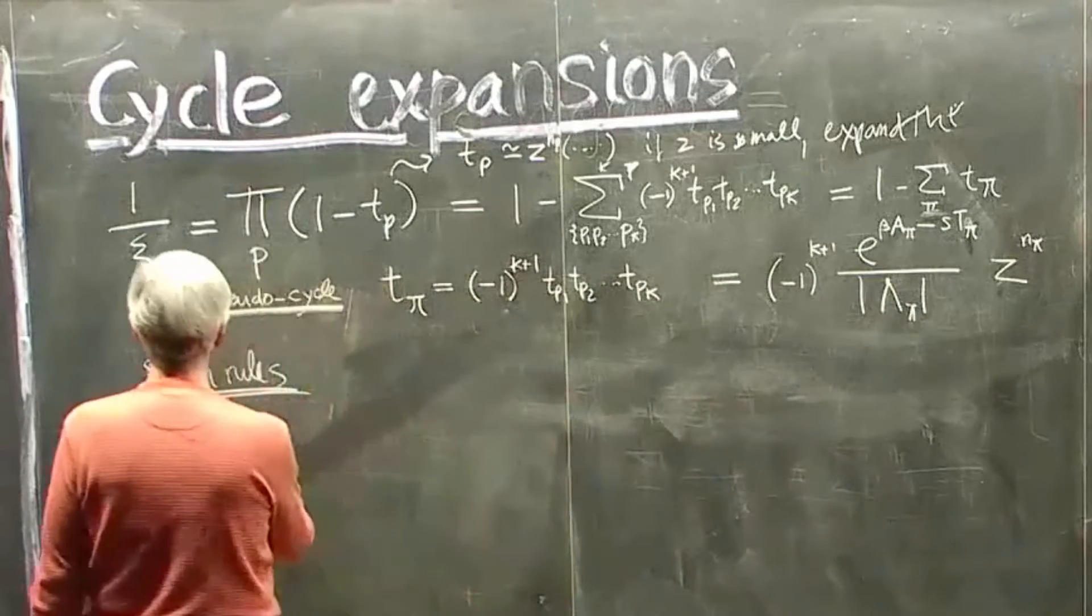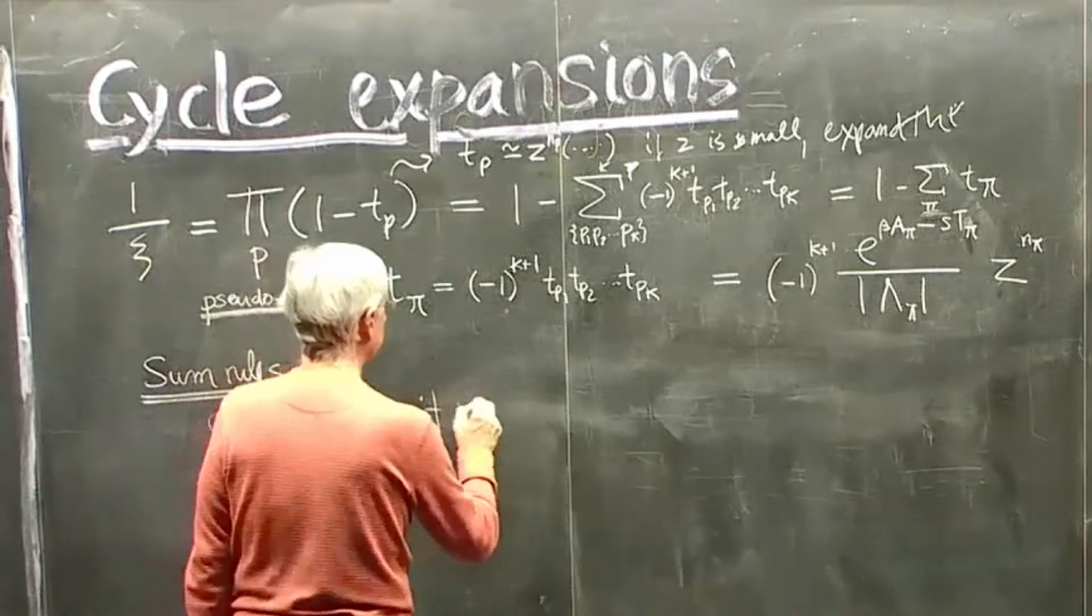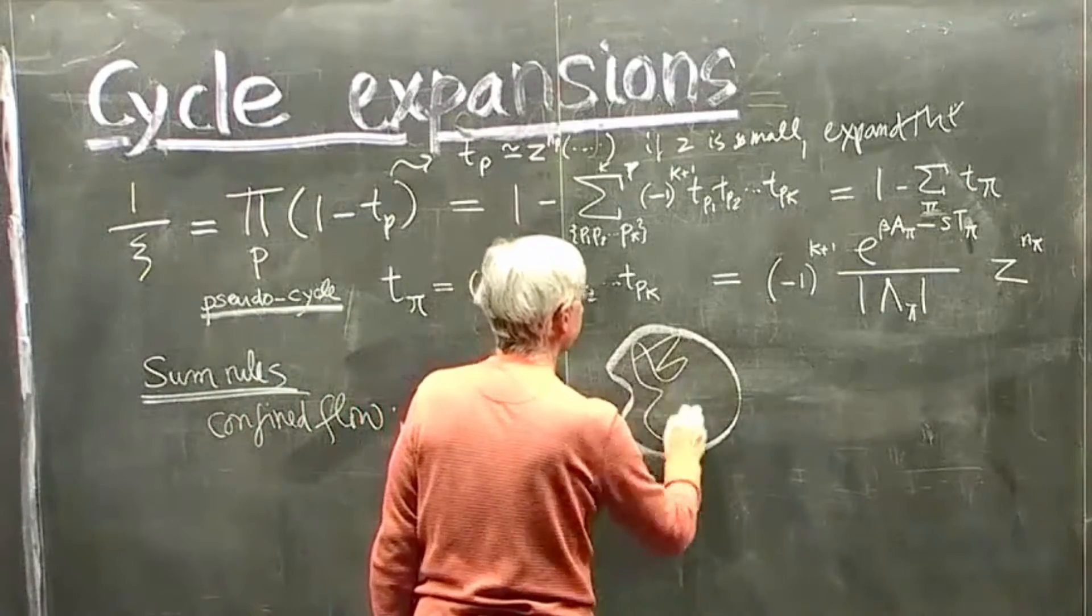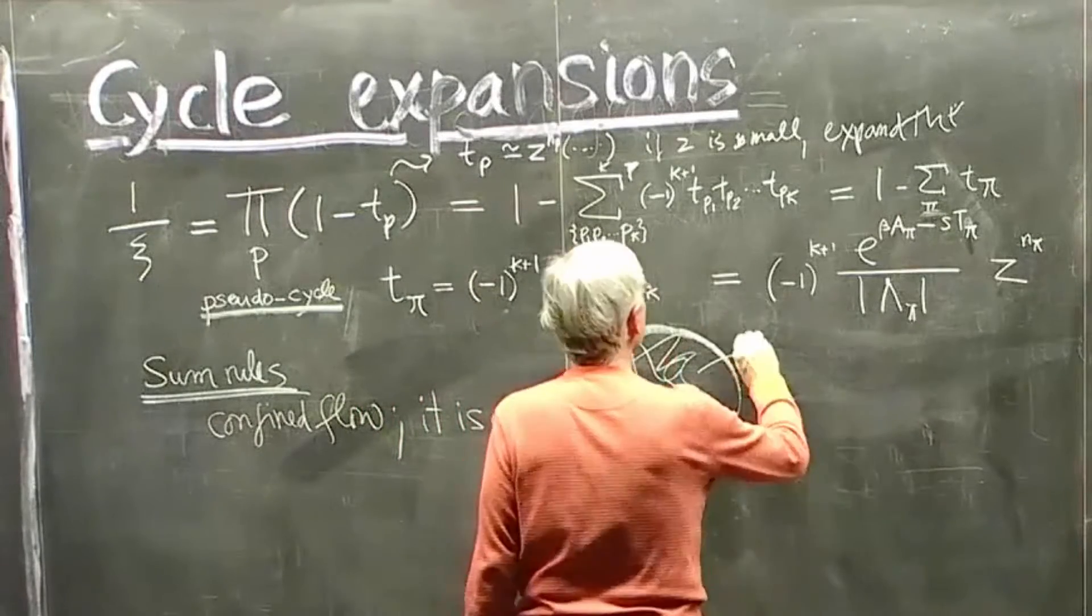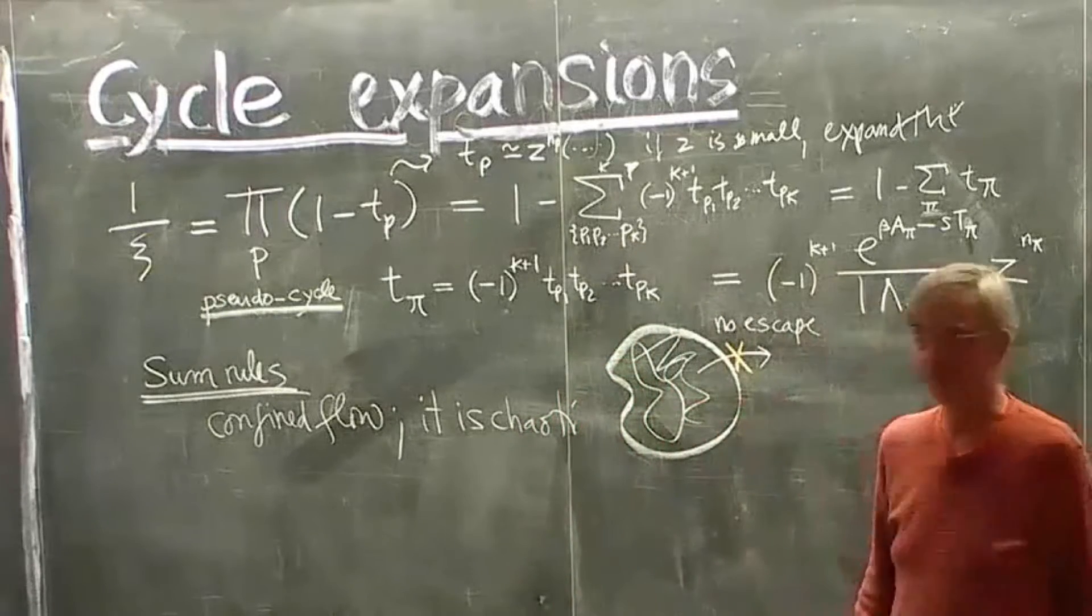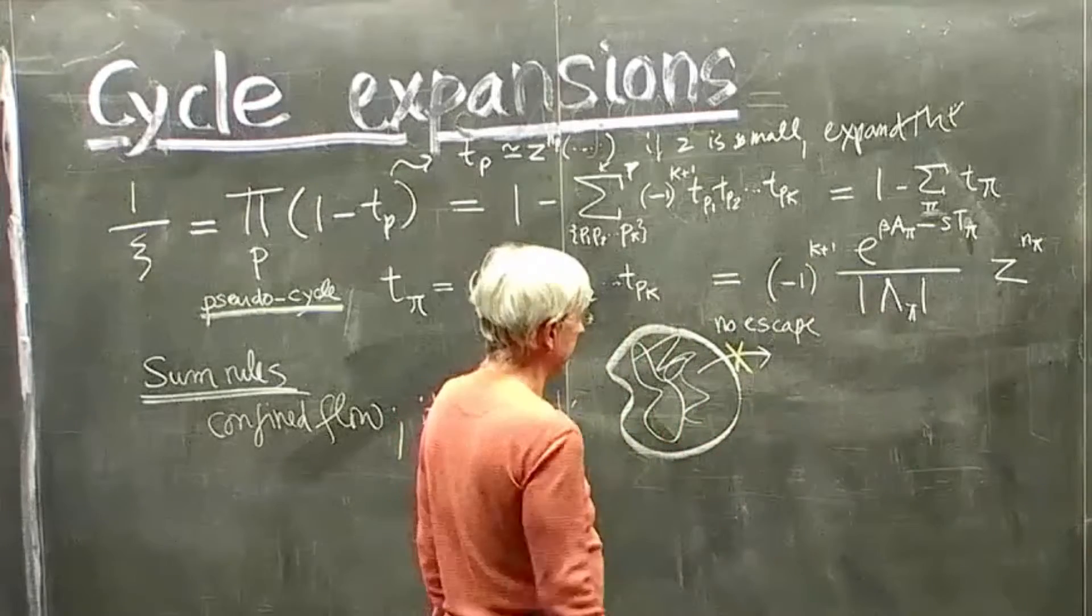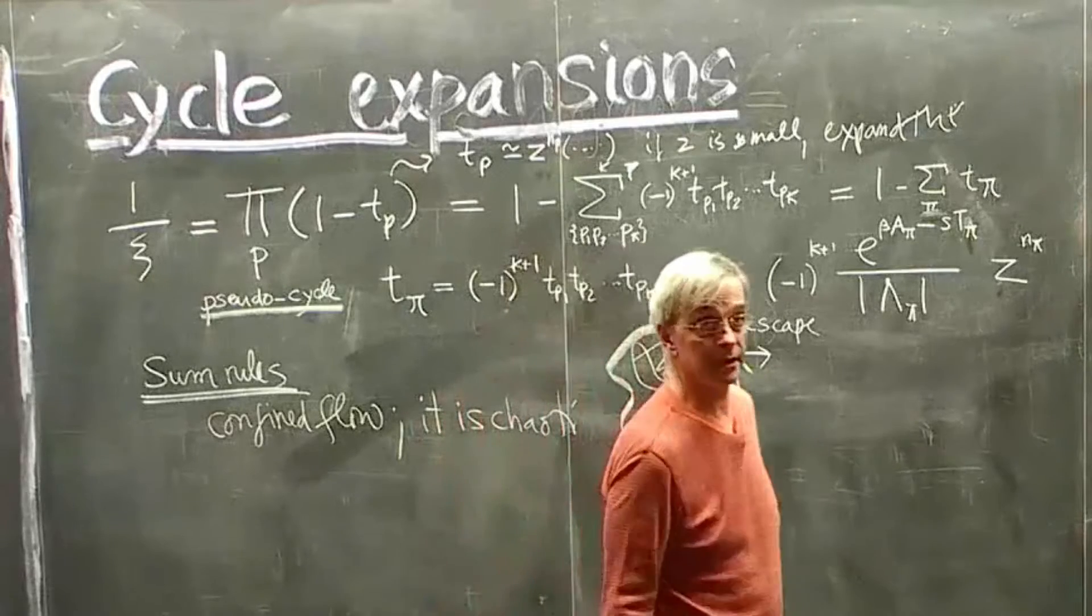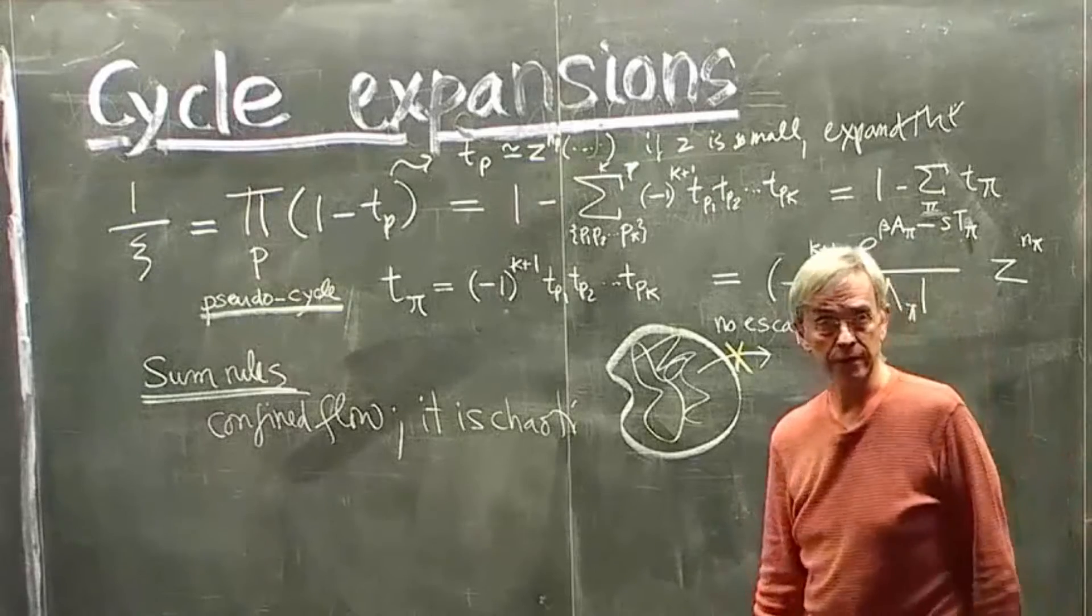If you have confined flow, it is chaotic, but you're confined in some region, doing something complicated. Escape, no escape. Now, we all discussed what escape rate is. It's a likelihood that you leave this region per unit time, and it's related to the leading eigenvalue of your evolution operator.